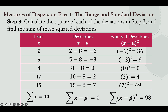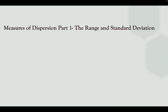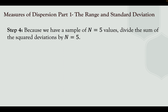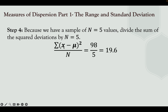Find the sum of the squared deviations: 36 + 9 + 0 + 4 + 49 = 98. Since we have a population of n = 5, divide the sum by n = 5. So 98 divided by 5 gives us 19.6.